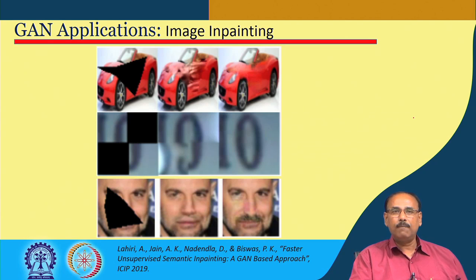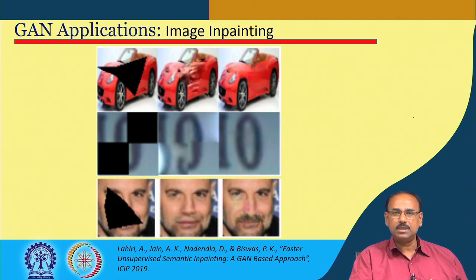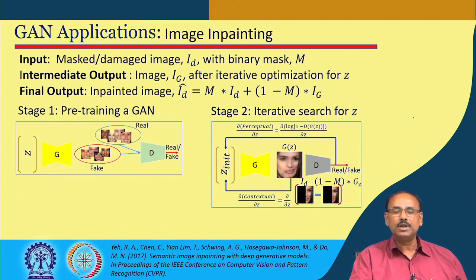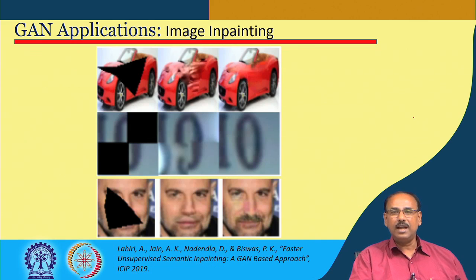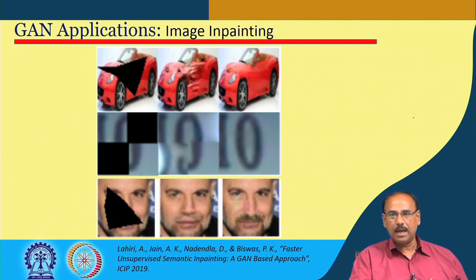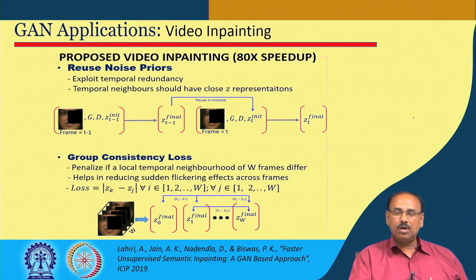Results show that in the leftmost column are the damaged images fed to the network. The middle column shows outputs from Yeh et al. (CVPR 2017). The rightmost column is our output, presented at the International Conference on Image Processing 2019 in Taipei. We then extended this concept to video inpainting.